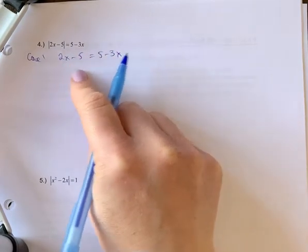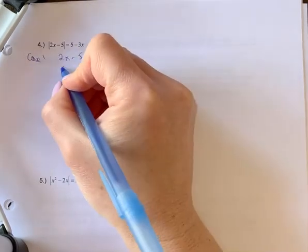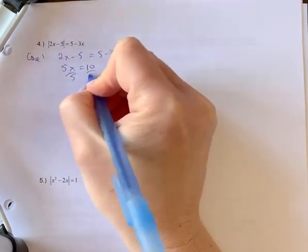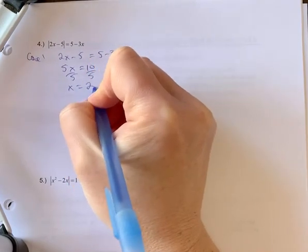So now we're going to isolate. We're going to move the x over and the number over. So we're going to have 5x equals 10. Divide off the 5. x equals 2.